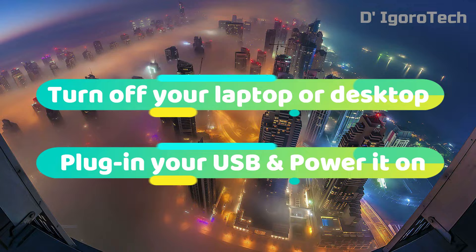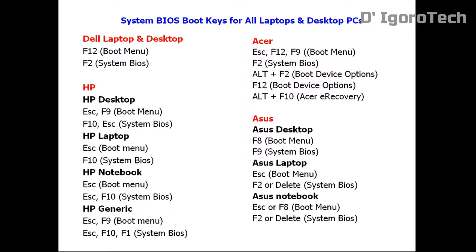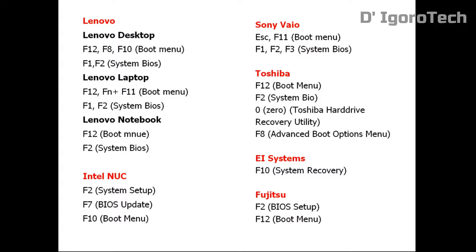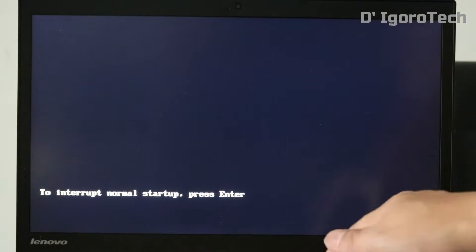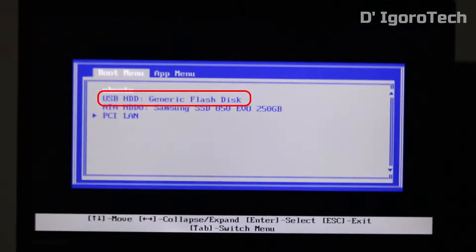First, turn off your laptop or desktop. Plug in your USB and power on your device. Be ready to press your boot menu key. I'm using a Lenovo ThinkPad so mine is Function Plus F12. Yours would be different depending on the model of your device. Here are the list of boot menu keys. For Lenovo press F12 or Function Plus F12. In this window, select USB HDD, Generic Flash Disk.